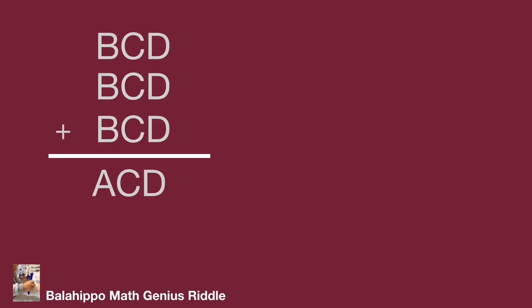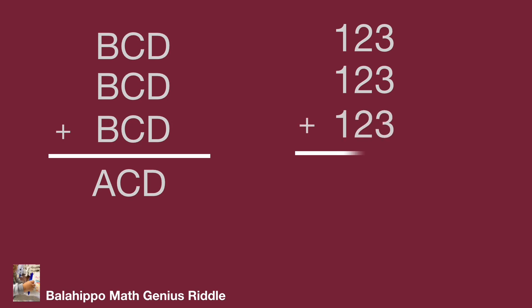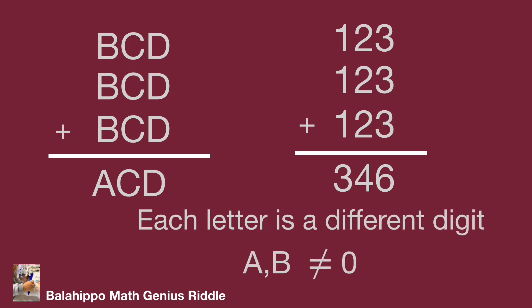Our question is: three-digit number BCD plus BCD plus BCD equals another three-digit number ACD. Take an example: while BCD equals 123, B is 1, C is 2, and D is 3. Then 123 plus 123 plus 123 equals 369 — another three-digit number. This illustrates the meaning of our question. Each letter is a different digit, and A and B are not equal to zero. But obviously, for our example, 369 cannot meet our condition.